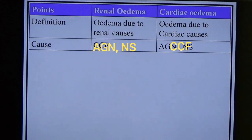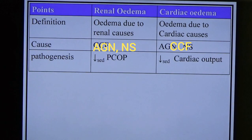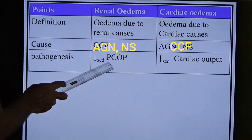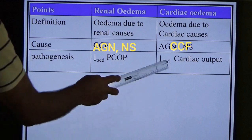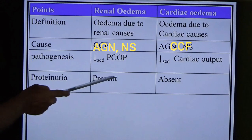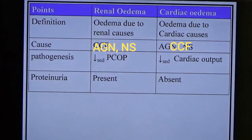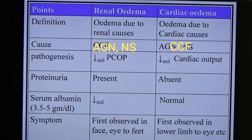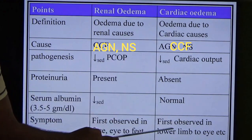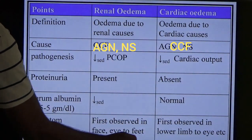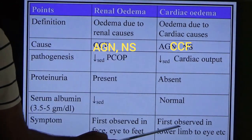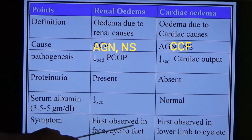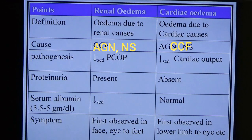Pathogenesis difference: renal edema — decreased PCOP; cardiac edema — decreased cardiac output. Proteinuria: present in renal edema, absent in cardiac edema. Serum albumin: normal in cardiac edema, decreased in renal edema (normal: 3.5–5 g/dL). Clinical symptom: renal edema first appears in the face/eyes, progressing downward (face to feet); cardiac edema first appears in the lower limbs (dependent edema), progressing upward.